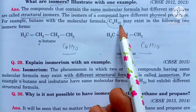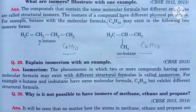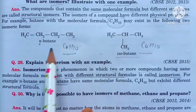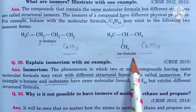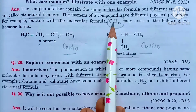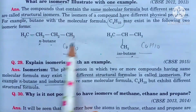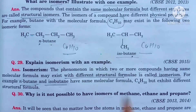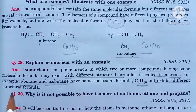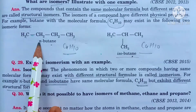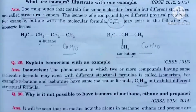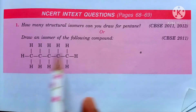C4H10 is a good example of isomerism. Butane can be written as n-butane. Their molecular formula is the same — C4H10 — but their structural formula is different. So C4H10 exists in two forms: it has two structural isomers — n-butane and isobutane.